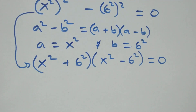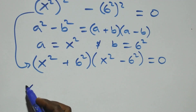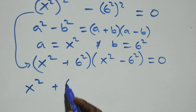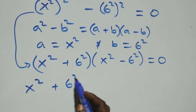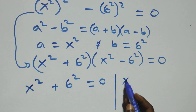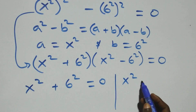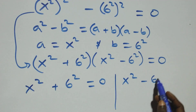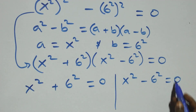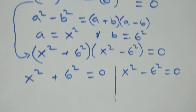Then we have two possible cases: the first term, x squared plus 6 squared equals 0, and the second, x squared minus 6 squared equals 0.